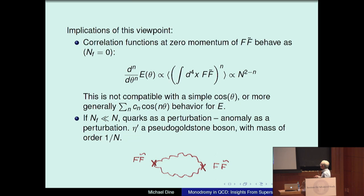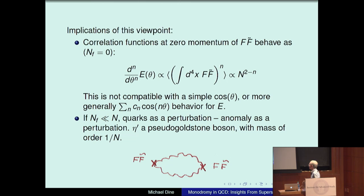I've drawn a diagram with two insertions of F-dual. You have two factors of G squared from propagators and a factor of N squared from the number of gauge bosons — so this one's order one, N to the zero. If you stick in more F-dual insertions, you would find additional factors of 1 over N. This is not compatible with a simple cosine theta or cosine N theta behavior for E — at least a nice smooth behavior. Things like cusps are allowed.